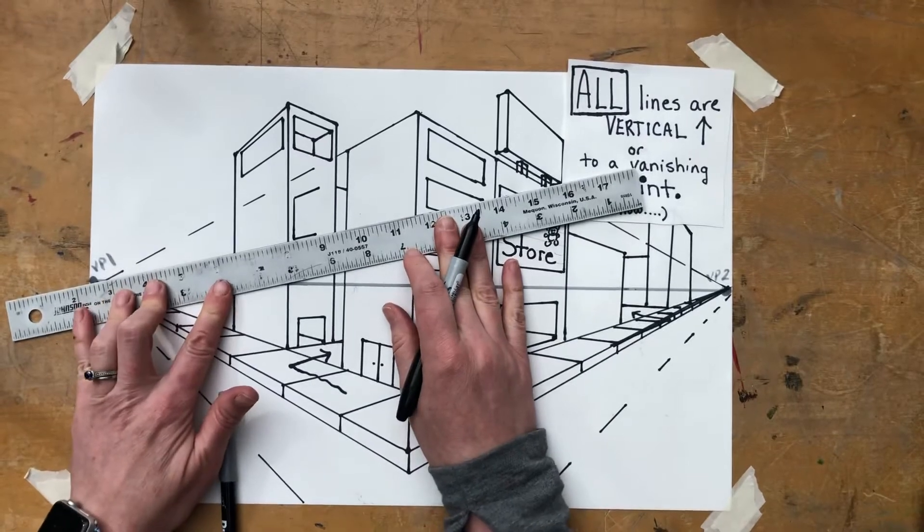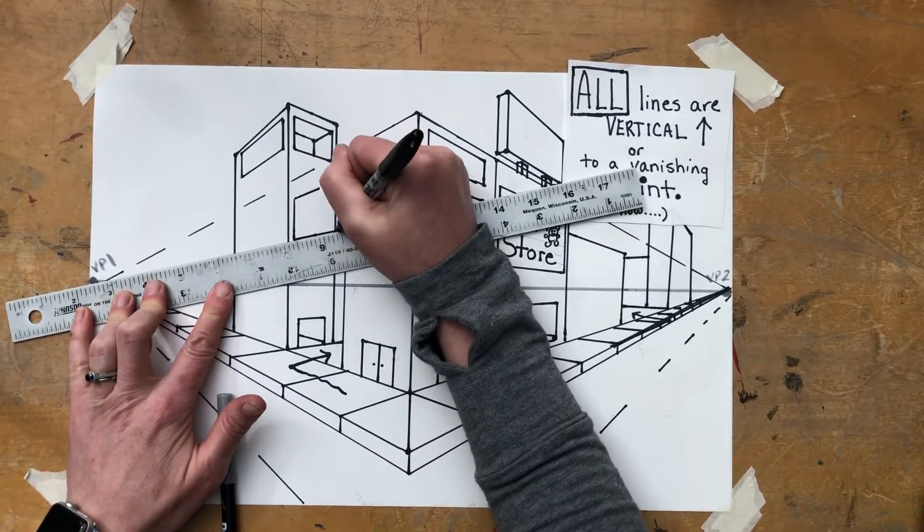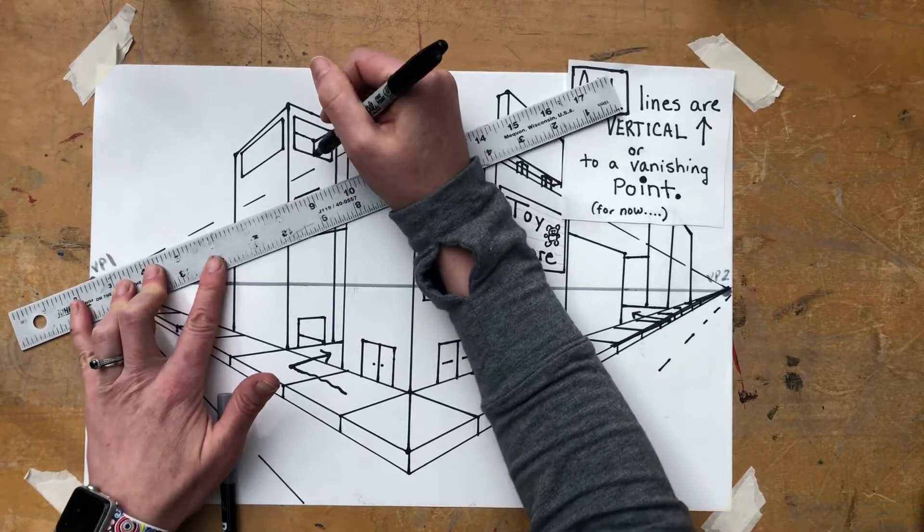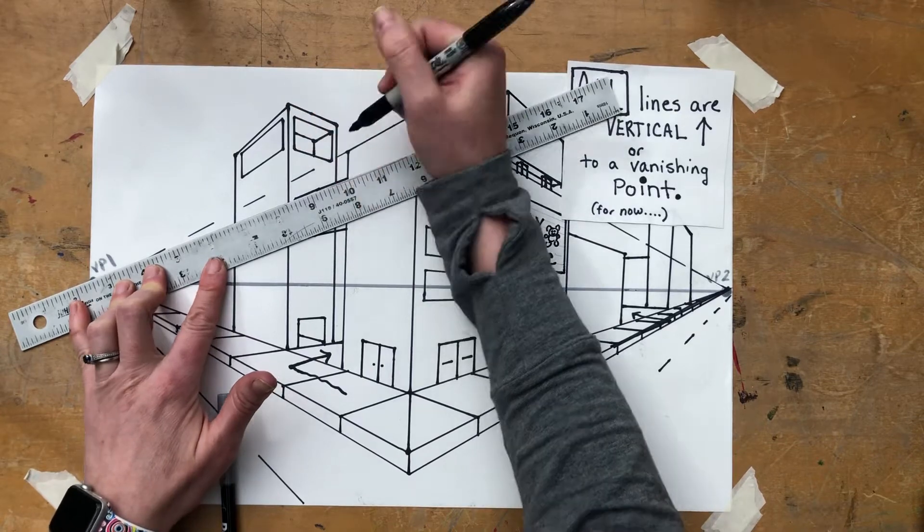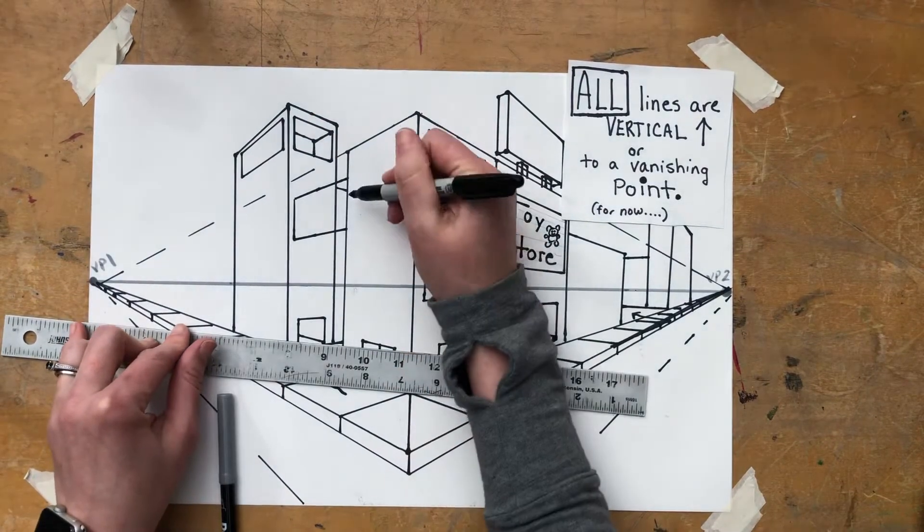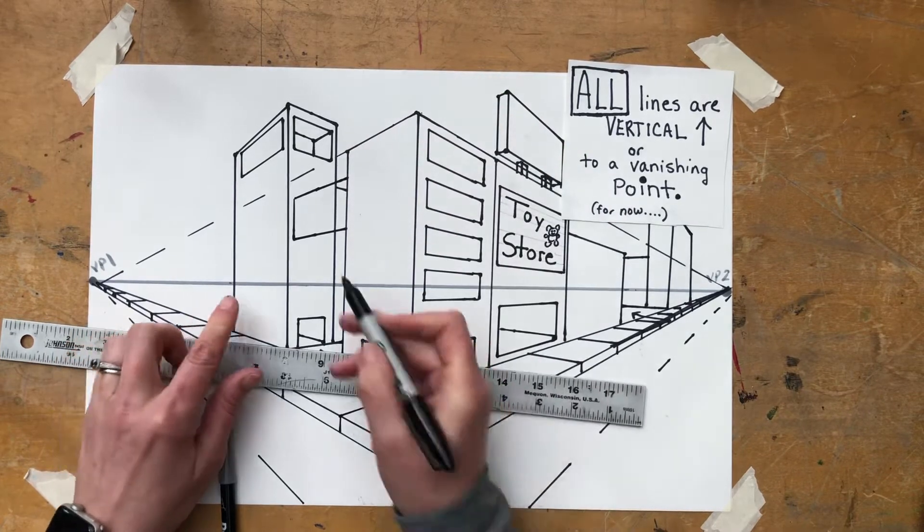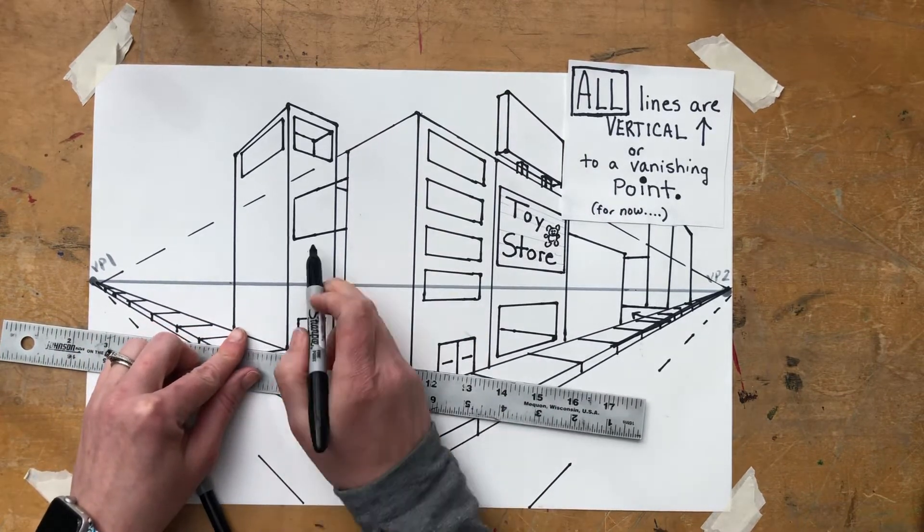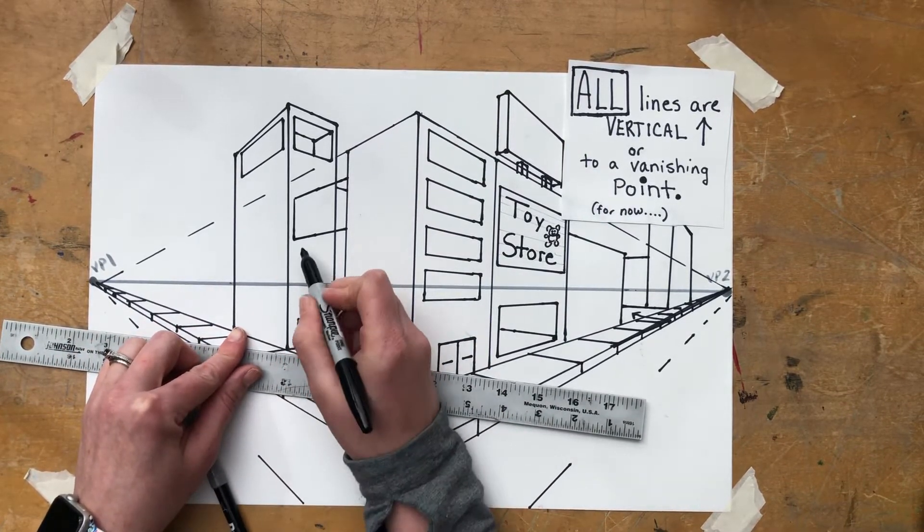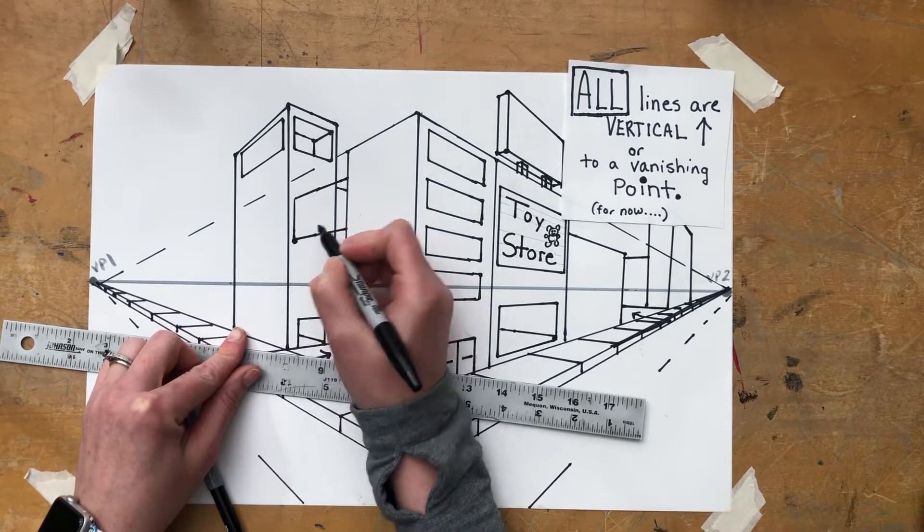If I connect them to the next building, keeping in line to vanishing point one, now we have what looks like the side of a walkway. We would erase these lines in here unless it's transparent. But again, we're looking up like we're a worm above the horizon line. So we would see the bottom of the skywalk.